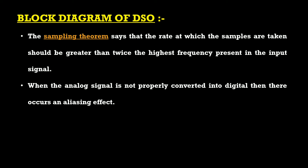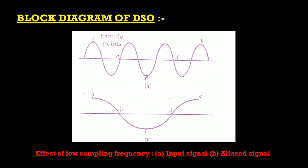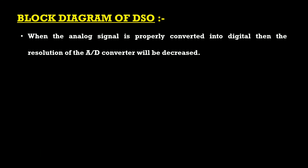When the analog signal is not properly converted into digital, an aliasing effect occurs. Looking at the waveform diagram, figure A shows the input signal with sample points A, B, C, D, and E. Figure B shows the aliased signal based on those same sample points. Comparing both signals gives a clear understanding of the aliasing effect caused by low sampling frequency.